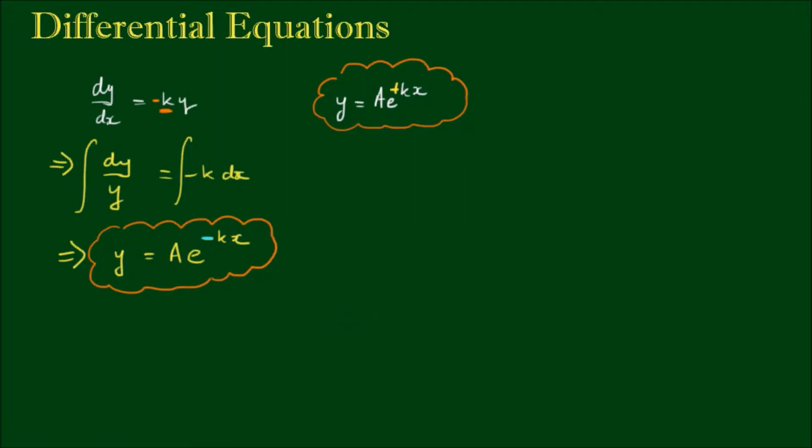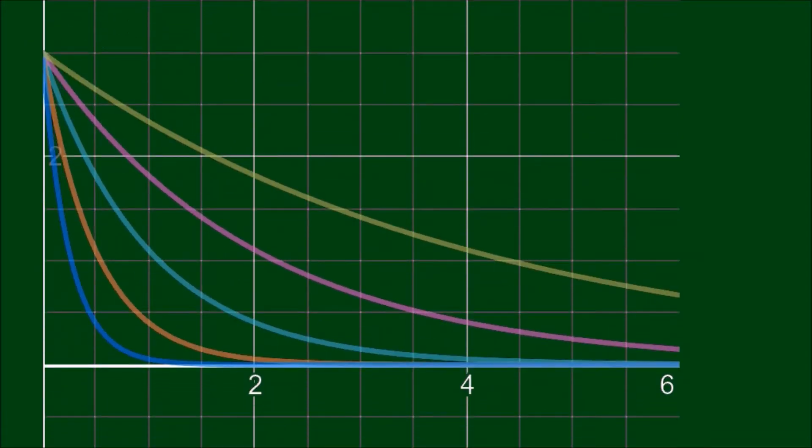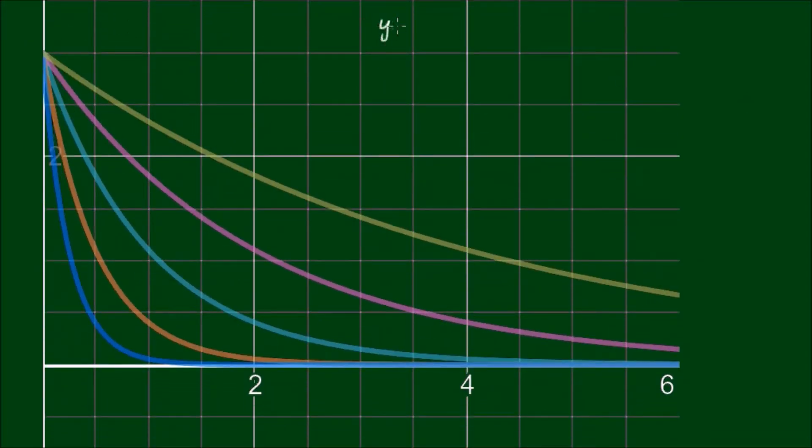Alright so what does this mean physically? Well this is what the family of solutions y equals Ae^(-kx) looks like for several values of k. Actually in all of these examples we have a equals 3, the coefficient in the front. So the equation is 3e^(-kx).